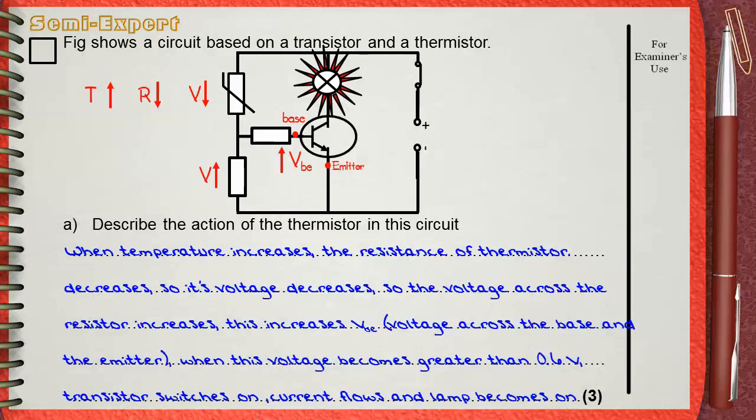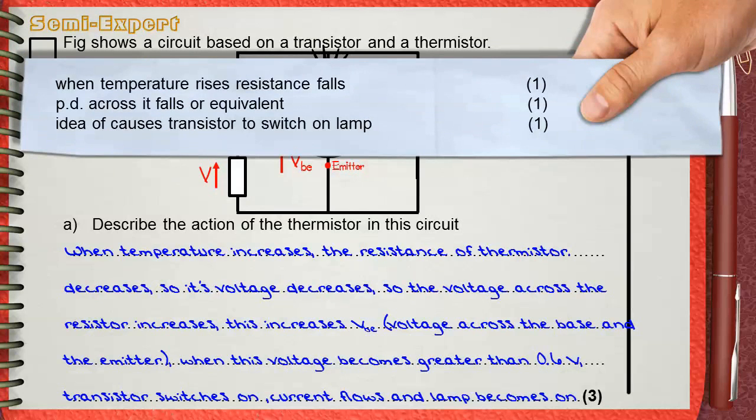Three marks given by the mark scheme. The first mark is for mentioning that when temperature rises, the resistance of the thermistor falls. This is what we said here.